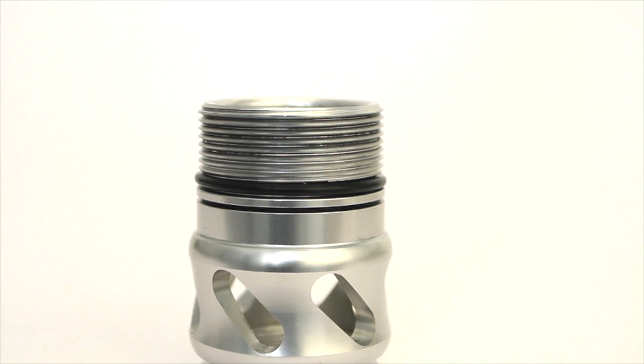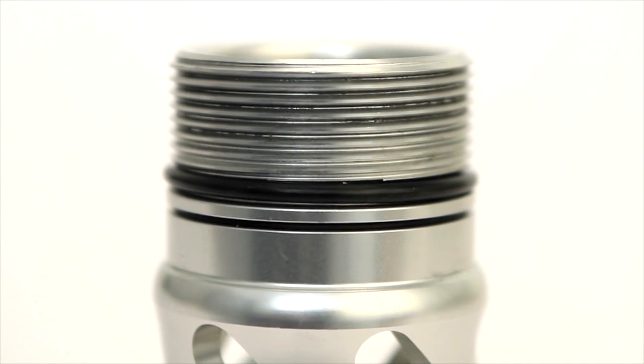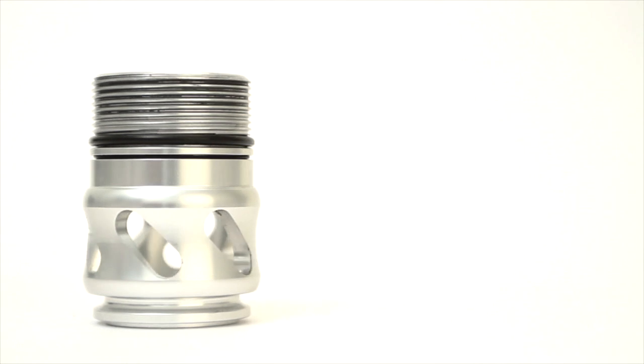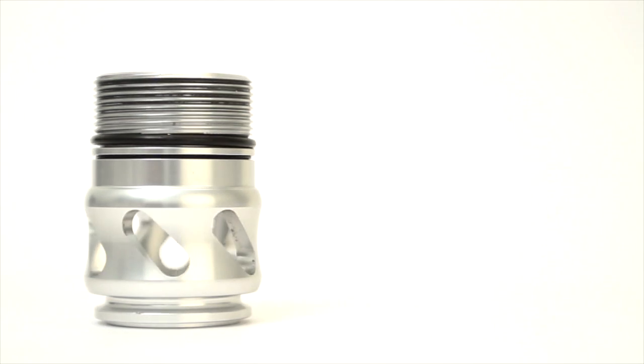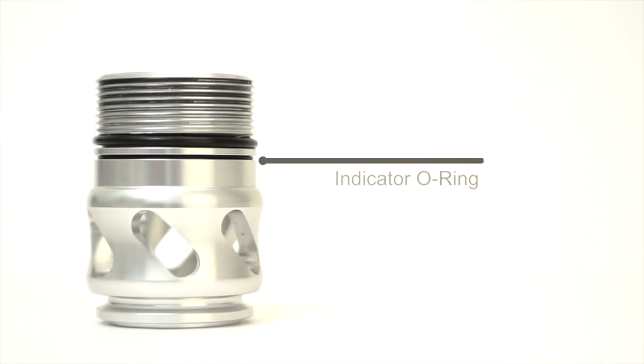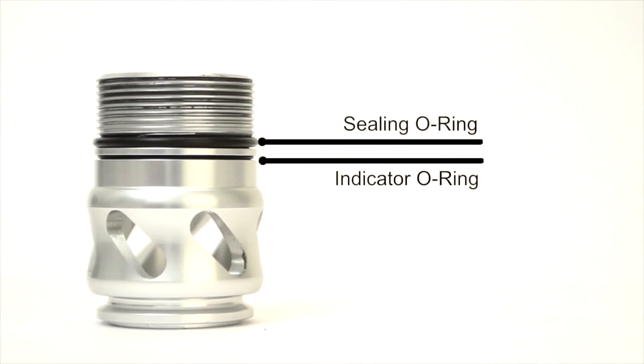You should also take the time to check the O-ring for any damage and replace if necessary. All Type 5 BOVs and bypass valves like our V-port should have a thin indicator O-ring as well as a sealing O-ring on the body.